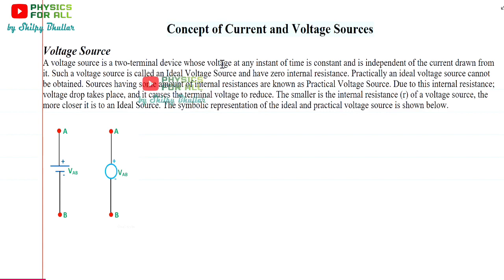With time, internal resistance generates. Every appliance, every source develops its own internal resistance with time. Maybe in the beginning there is no significant internal resistance, but with time, due to wear and tear and many other factors, that internal resistance develops. That's why it is called internal resistance — because it is internal to that particular source. So, with time, a voltage source's internal resistance can also develop. But if we are talking of an ideal voltage source, there would be no internal resistance, and practically this is not possible.